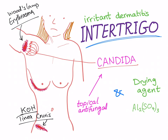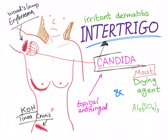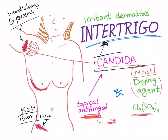Rule out both of these conditions before diagnosing a patient with candida intertrigo. For treatment, since the problem is moist skin folds, use a drying agent such as aluminum sulfate or corn starch, along with antifungal powders or other topical antifungal medications.